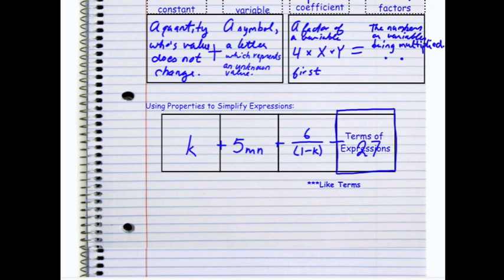So the first term I'm going to add is K, and then I'm going to say plus 5MN plus 6 over 1 minus K minus 27. And when I look at this expression, I have a lot of variables, I have a lot of numbers, but I want to identify each term. Terms are separated by addition or subtraction.